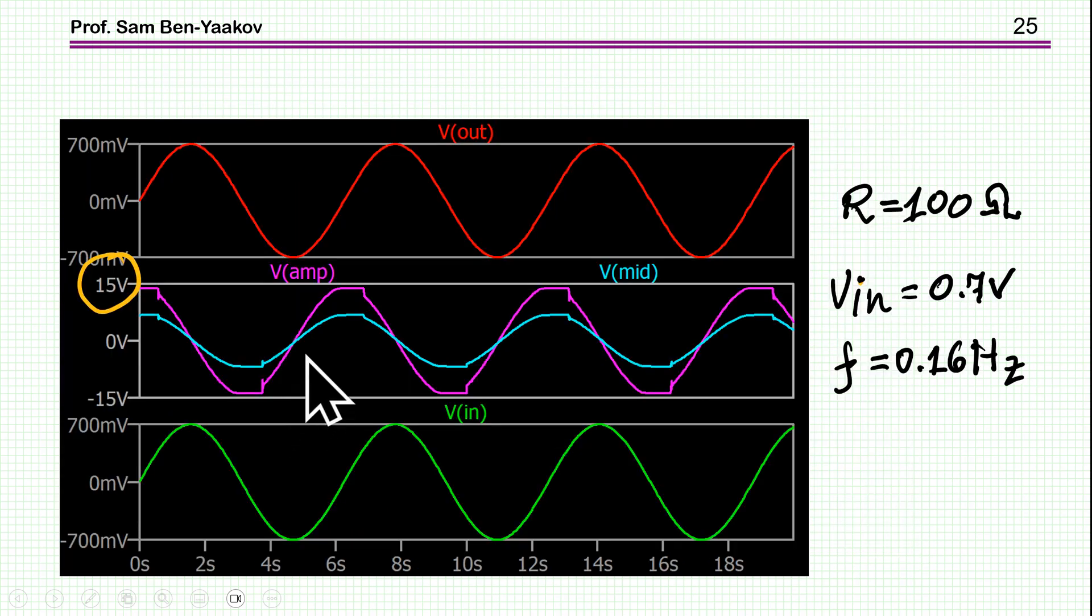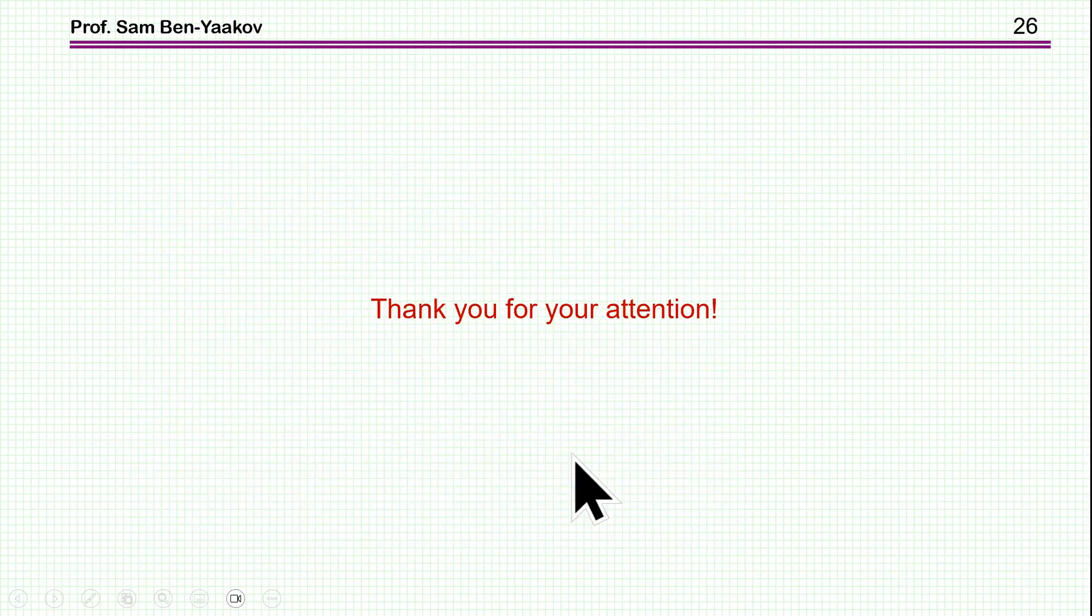Now what about the magnitude of the signal that you can actually pass due to the limited slew rate? Well, here is the case that I am passing an input signal of 0.7 volt, frequency of 0.16 hertz, so I am just a little bit below the 1 volt, and you see that we are already starting to clamp. So this brings me to the end of this presentation. I hope you found it of interest, and perhaps it will be useful to you in the future. Thank you very much.